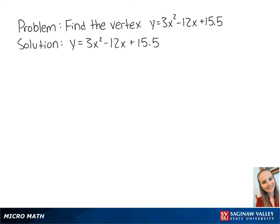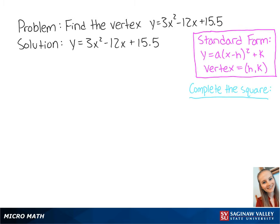For this problem, we want to find the vertex of the equation y equals 3x squared minus 12x plus 15.5. To find the vertex, we want to put the equation into standard form by completing the square.